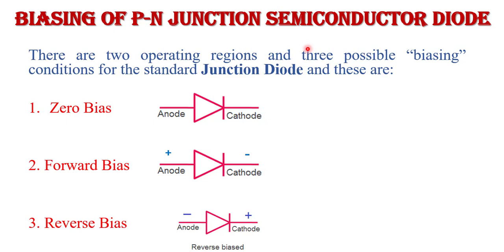Biasing is the process of applying an external DC voltage to the semiconductor diode. Biasing is required to make the device conduct or to make current flow across the device. There are basically three biasing conditions: first is zero bias, second is forward bias, and third is reverse bias.